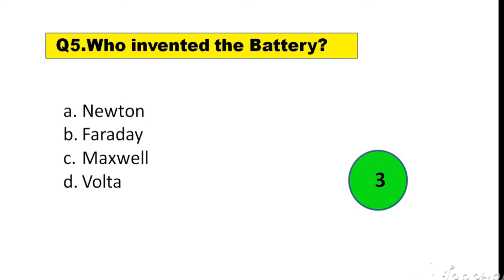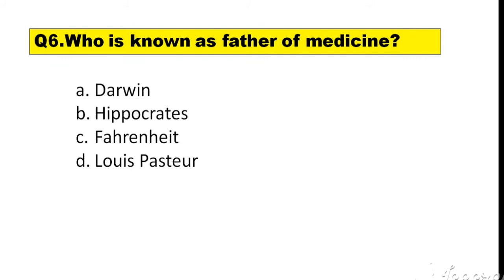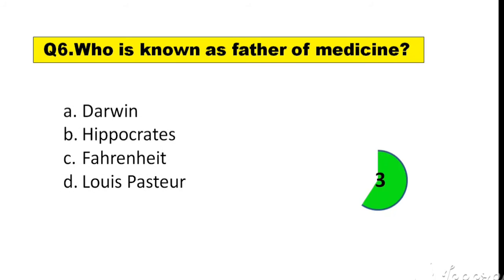Question number 6. Who is known as the father of medicine? Options are: A. Darwin, B. Hippocrates, C. Fahrenheit, D. Louis Pasteur. The right answer is option B — Hippocrates.